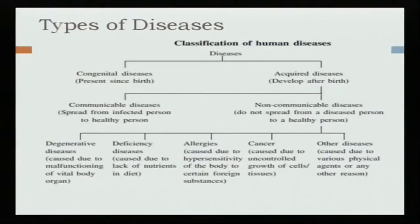Disease ko agar hum aage badhenge aur detail mein jaana chahein toh disease ko hum kaise classify karte hain. There is a classification of human disease. Disease do tarike se hai — hum usko classify karte hain: ek congenital disease hai, ek acquired disease hai.